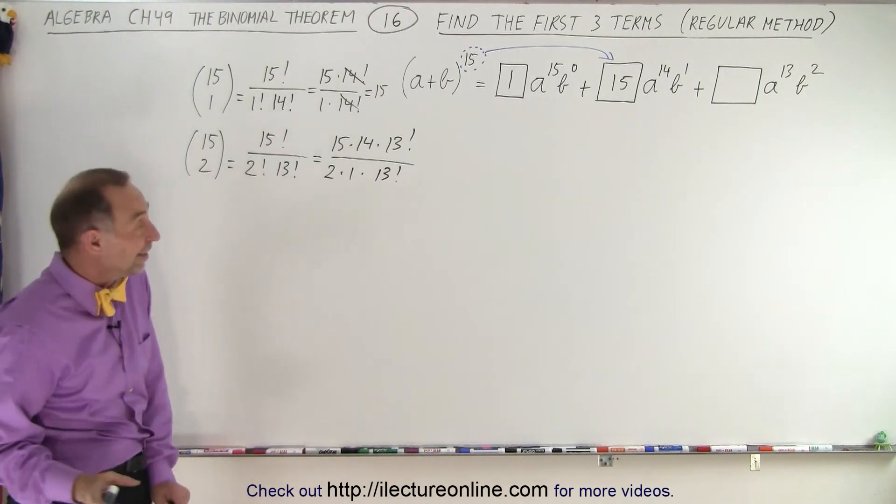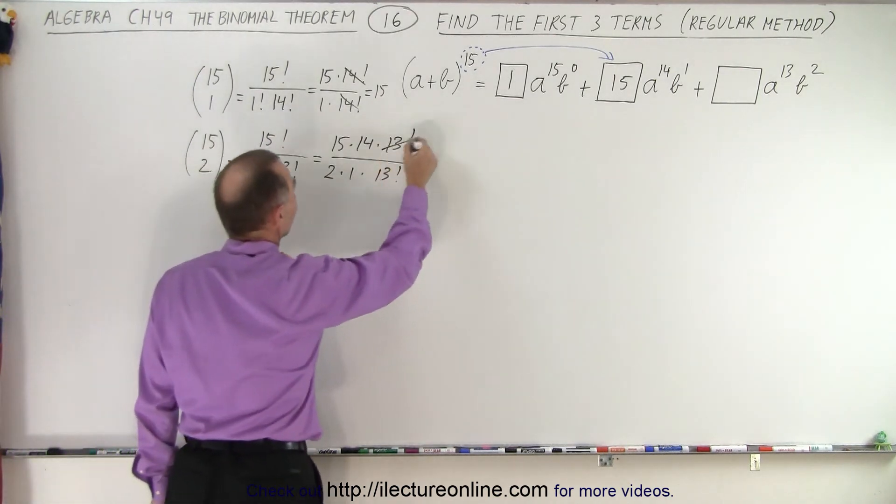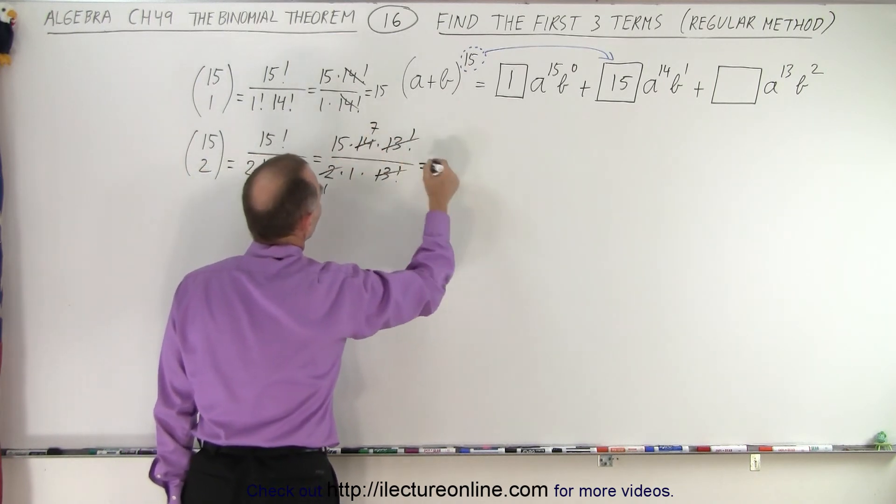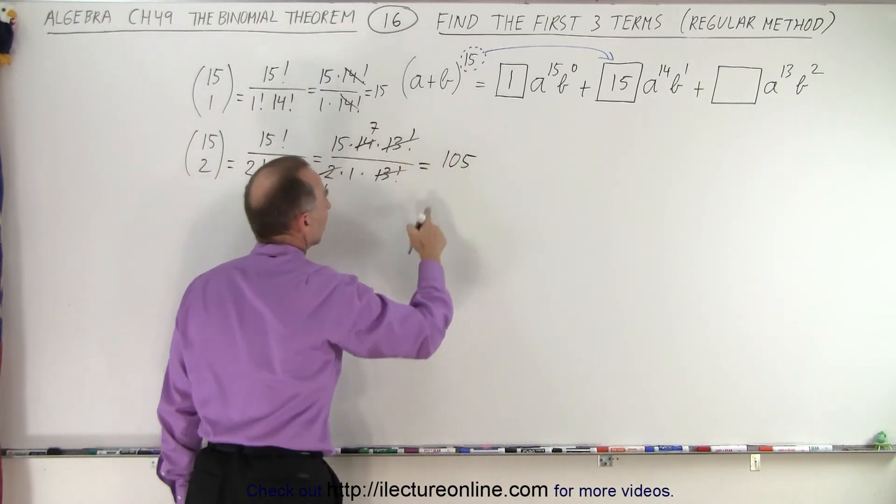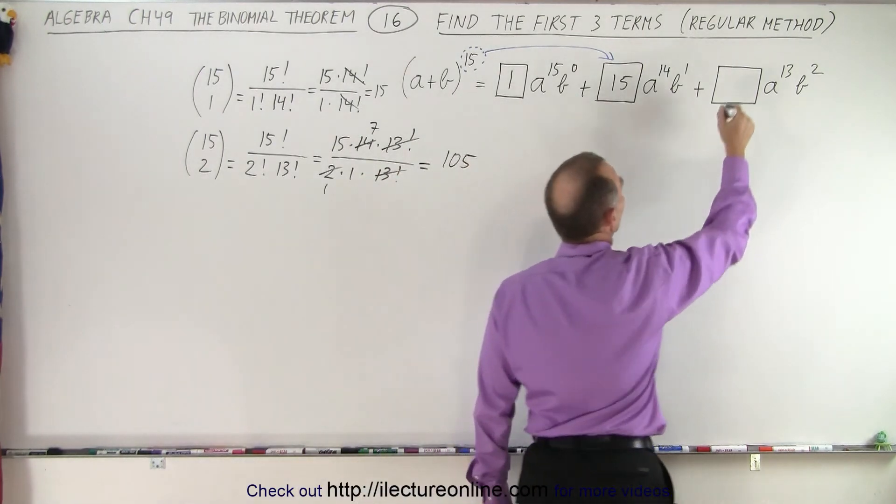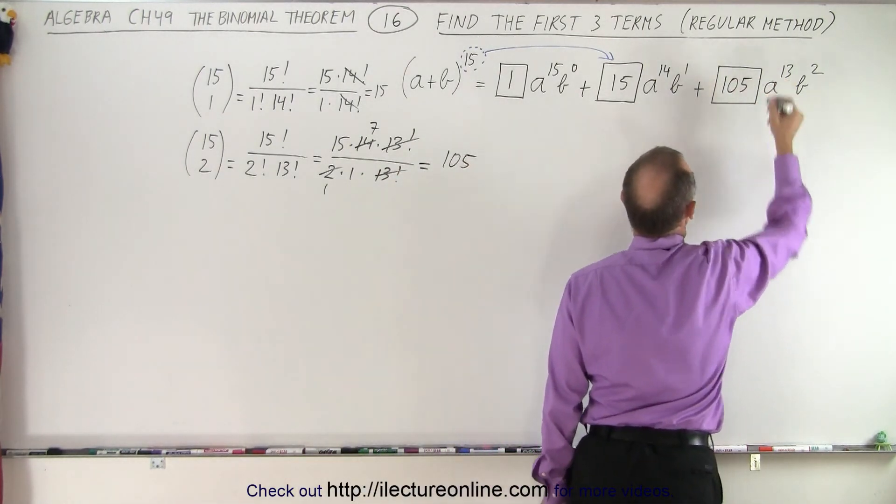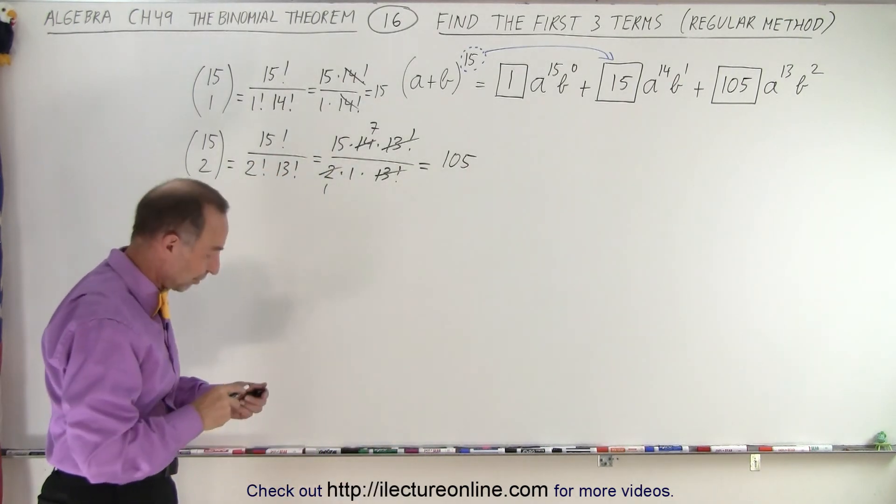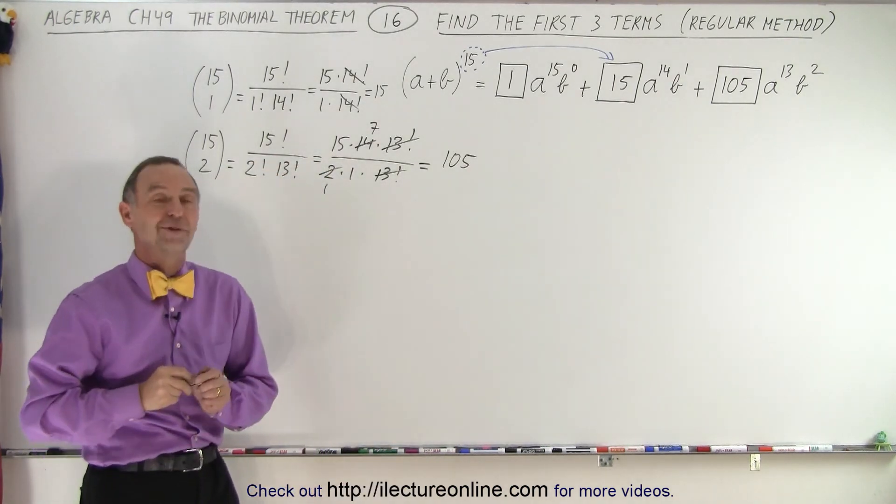When you write it like that, it's easy to see that the 13 factorial cancels out. The 2 and the 14 will cancel to 7 and 1. And so that means 7 times 15 or 105 divided by 1. So that means that the third coefficient, numerical coefficient is equal to 105, which is what we found when we used the trick in the previous video. And that is how it's done.